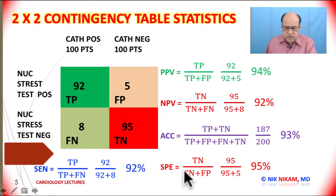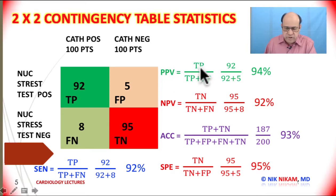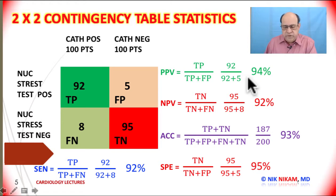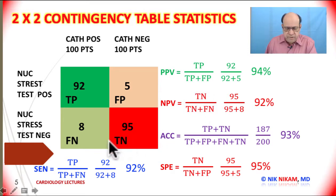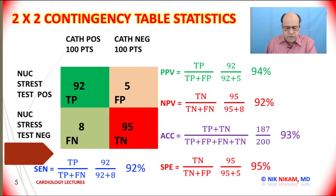In addition to sensitivity and specificity, we have three other numbers to consider. The positive predictive value is calculated by dividing true positives by true positives plus false positives — going across the table. That gives us 92 divided by 92 plus 5, which is 94 percent. The negative predictive value is calculated using true negatives divided by true negatives plus false negatives, giving us 92 percent negative predictive value for this research.